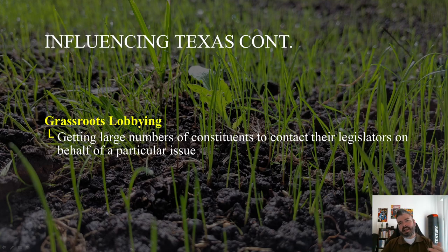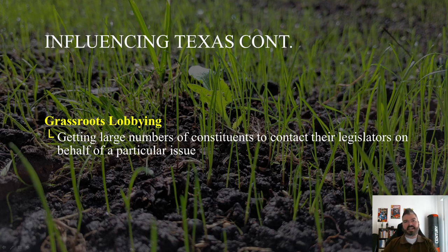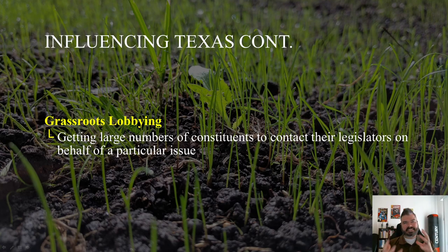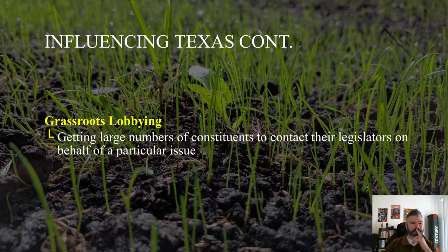Why is grassroots lobbying powerful? Think about it: who are legislators accountable to — interest groups or their constituents? That's right, their constituents. So it is powerful when constituent after constituent reaches out to an office about an issue. You're getting the people involved, and since constituents are the ones voting for legislators, they pay more attention. Legislators also meet with voters in their district — a good representative will come back to the district to meet with the people.